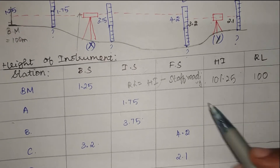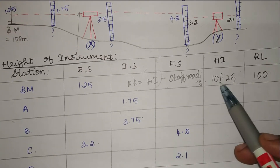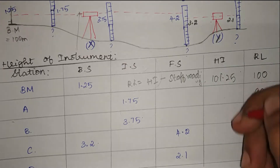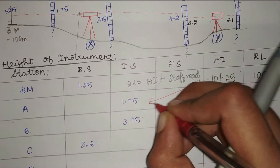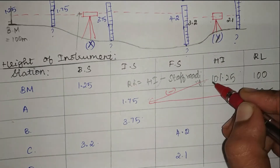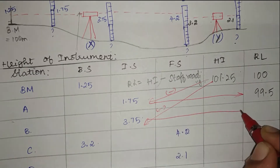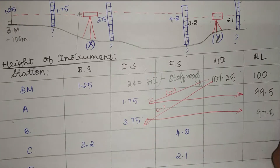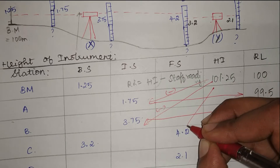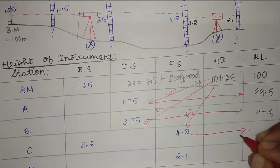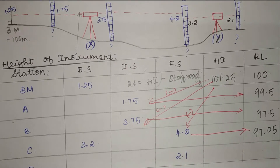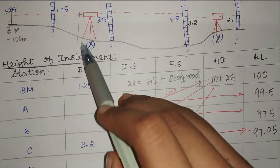Using RL = HI − Staff Reading: RL of A = 101.25 − 1.75 = 99.5. Next, RL of B = 101.25 − 3.75 = 97.5. And RL of C = 101.25 − 4.2 = 97.05. All these values have been taken from station X, so there is no issue with those calculations.